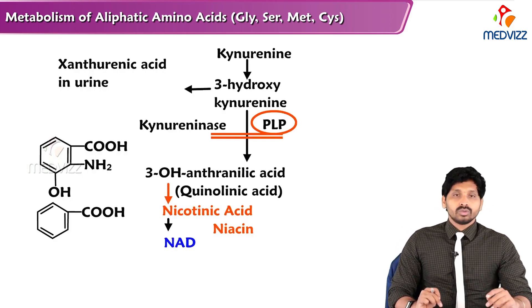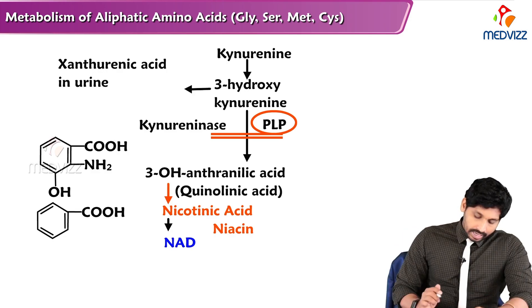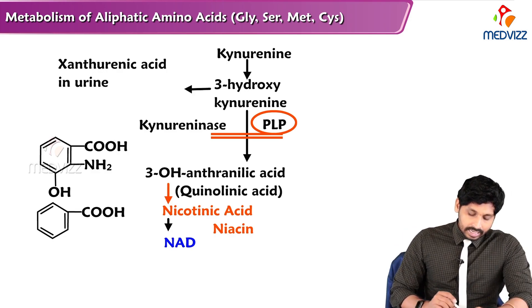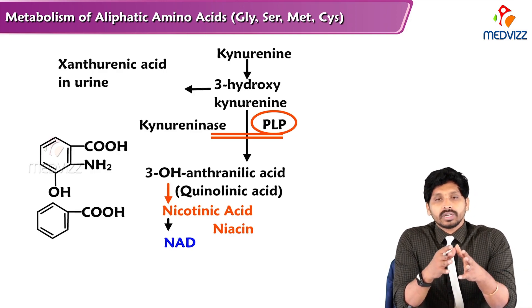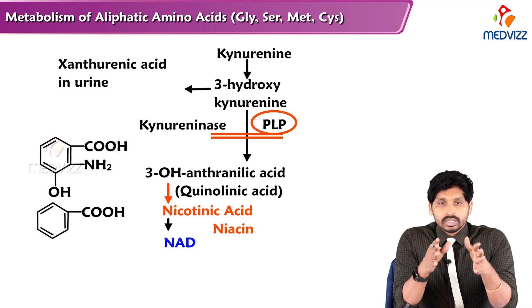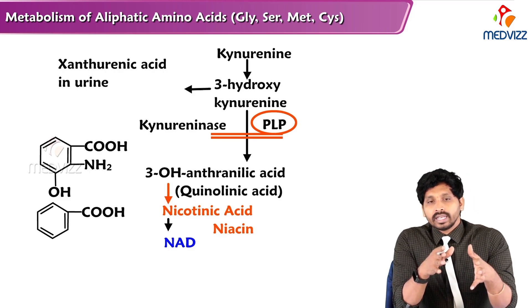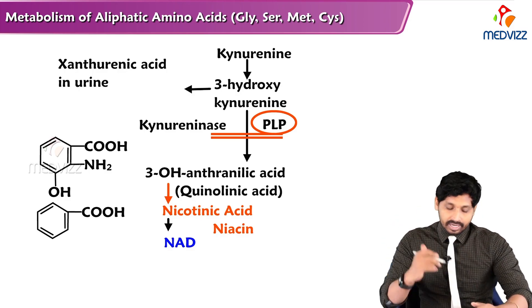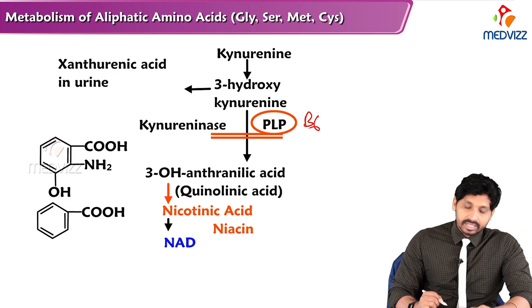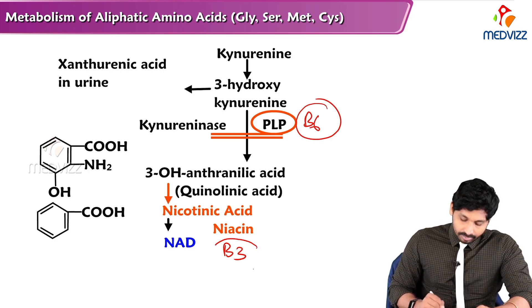This is how NAD and niacin are synthesized from tryptophan. To synthesize 1 mg of NAD, you require 60 mg of tryptophan. In the case of kynureninase deficiency, 3-hydroxykynurenine cannot be converted to 3-hydroxyanthranilic acid, so nicotinic acid and NAD cannot be formed. This means one vitamin deficiency — B6 (PLP) — leads to another vitamin deficiency — B3 (NAD).